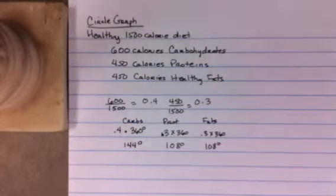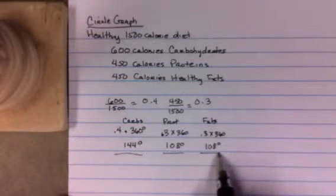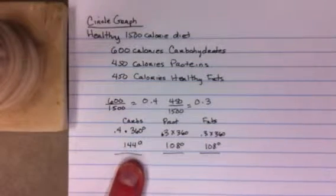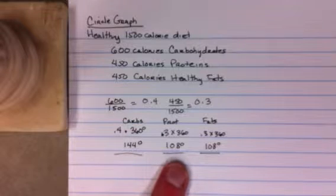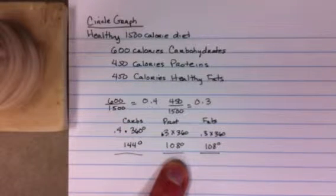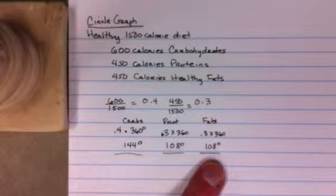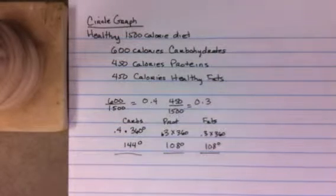So what we've got is three regions of this circle graph. One is for carbs, 144 degrees. One is for proteins, 108 degrees. And one is for fats, 108 degrees.